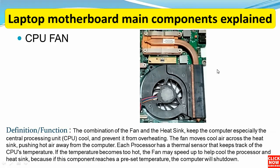The last component is the CPU fan. It is used to cool down the CPU. The combination of the fan and the heat sink keeps the CPU cool and prevents overheating. The fan moves cold air across the heat sink, pushing hot air away. Each processor has a thermal sensor that tracks the CPU temperature. If the temperature gets too high, the fan speeds up to help cool the processor, because if this component reaches a critical temperature, the computer will shut down automatically.